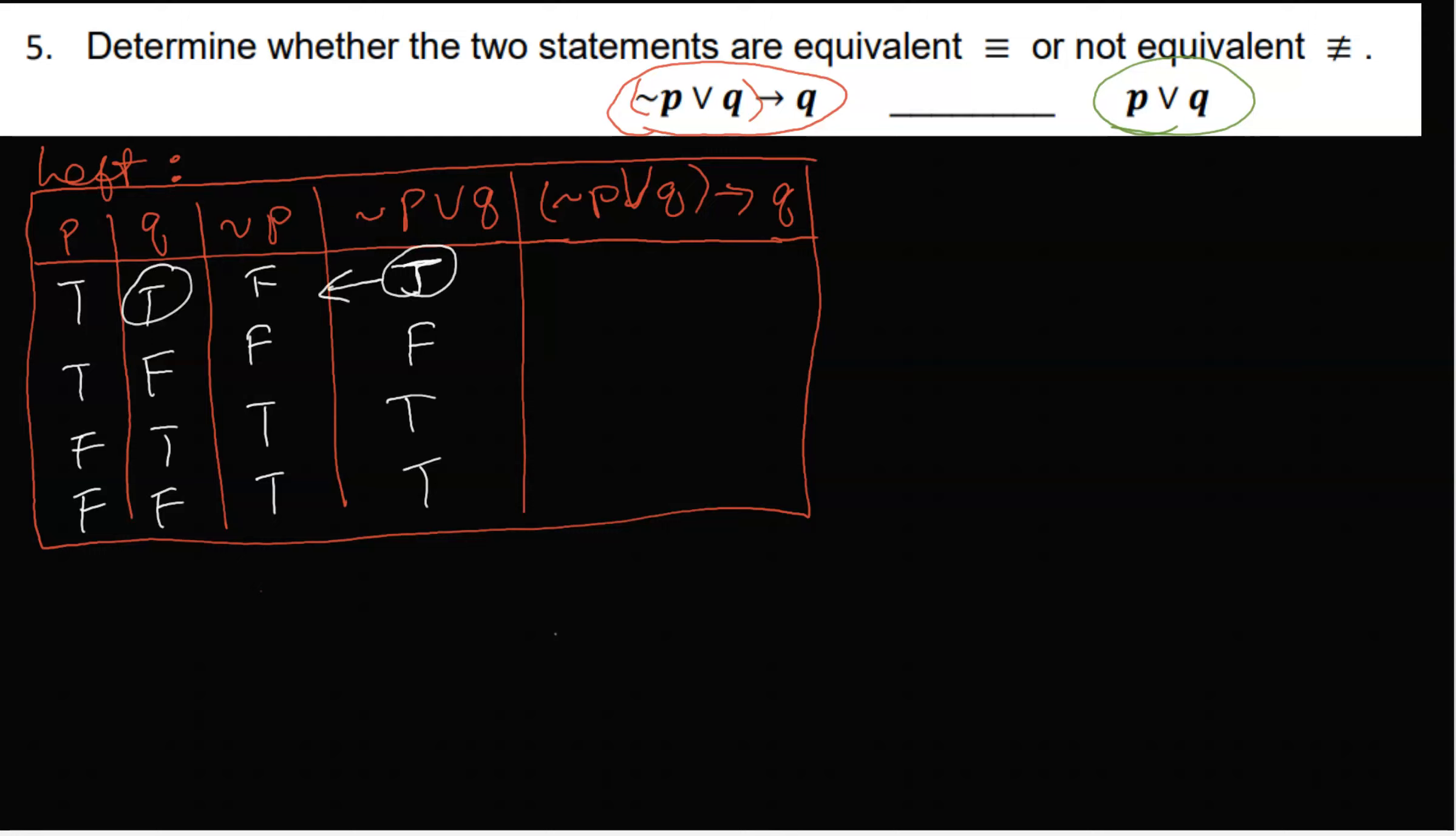True if true then true, then the statement is true. If false then it doesn't matter, your statement is true. If true then true, then your statement is true. If true then false, then your statement is false. That's on the left-hand side.